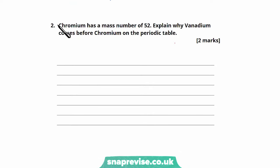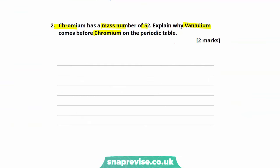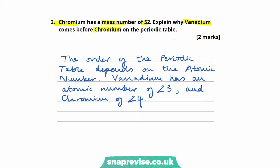Moving on to question two. Chromium has a mass number of 52. Explain why vanadium comes before chromium on the periodic table. The order of the periodic table depends on the atomic number. Looking at the periodic table, vanadium has an atomic number of 23 and chromium an atomic number of 24, which is why vanadium appears before chromium. This question is worth two marks: one for explaining that the order depends on atomic number, and one for giving the atomic numbers of vanadium and chromium.